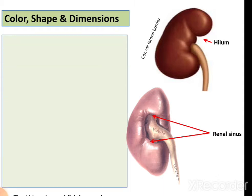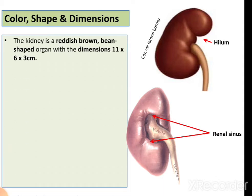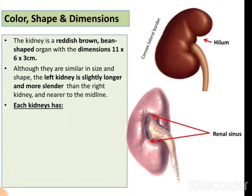The anatomical features include the color, shape, and dimensions. The color is reddish brown. It is a bean-shaped organ. The dimensions are 11 cm in length, 6 cm in width, and 3 cm in thickness. Although they are similar in size and shape, the left kidney is slightly longer and more slender than the right kidney and nearer to the midline.